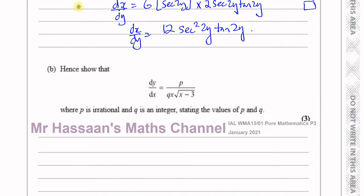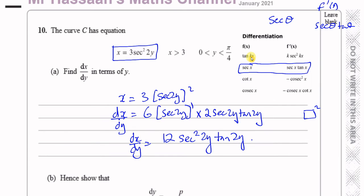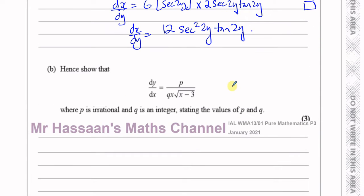That's part A done. Now for part B, we have dx/dy equals this, and we've got to show dy/dx equals a given expression. We notice that what we have to show dy/dx as has no y terms — just x terms. And we know originally from the question that x equals 3 sec²(2y). So we have to use this to try to express everything in terms of x, not y.